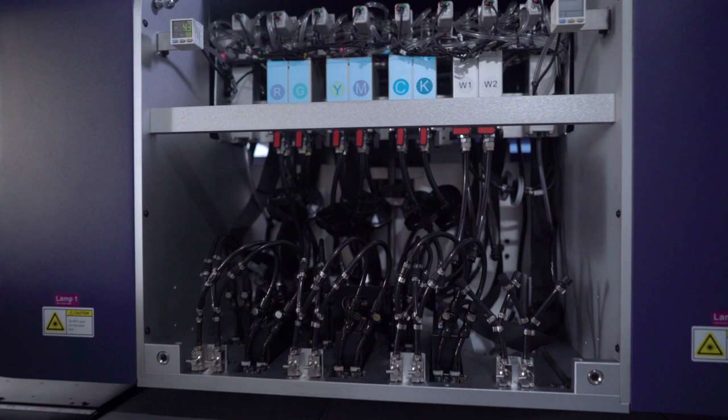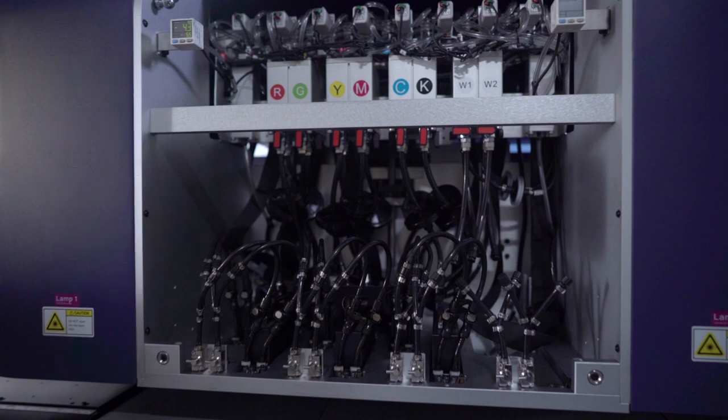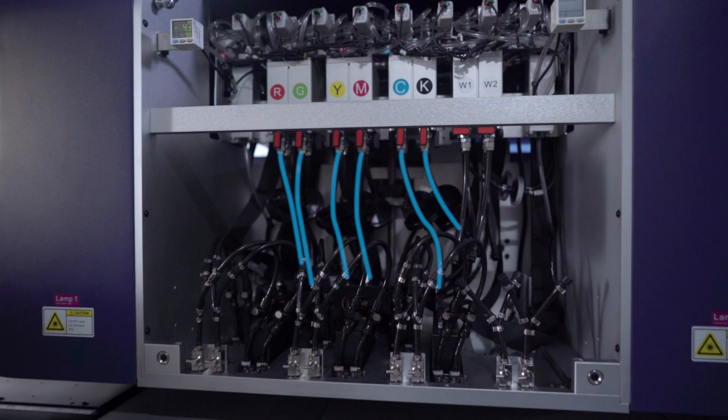Those are our sub tanks for the red, green, yellow, magenta, blue and black inks. The inks feed from the ink reservoir to the sub tanks, through the black tubing below, through the round discs you can see along the back which are your final filters to pull out any particulates before the printhead. From there it feeds directly to the heads.